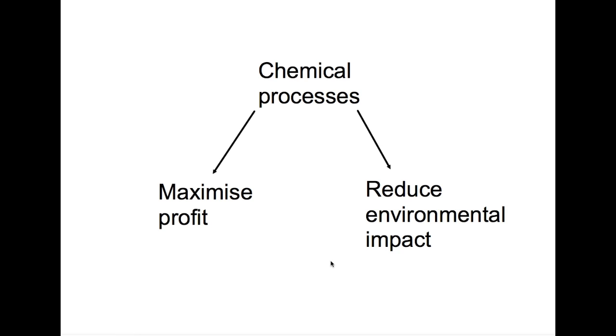This topic considers the decisions that need to be made when we have a chemical process on an industrial scale. The two main things that chemical processes need to consider are how they can maximize their profit and how they can reduce their environmental impact.